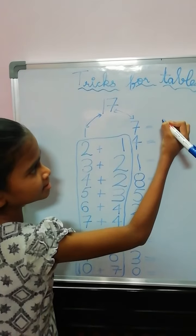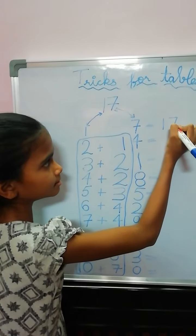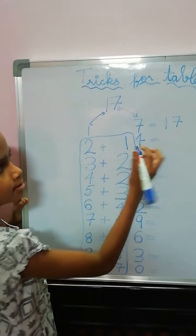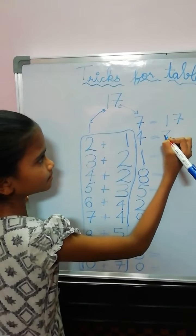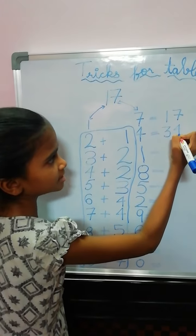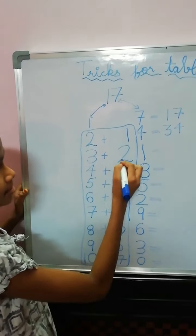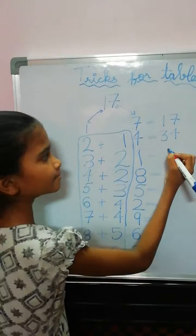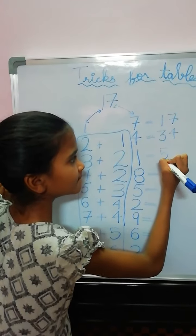17, 1's are 17. 2 plus 1, 3, and 4. 17, 2's are 34. 3 plus 2, 5, 5, 1.